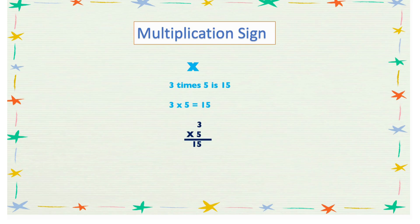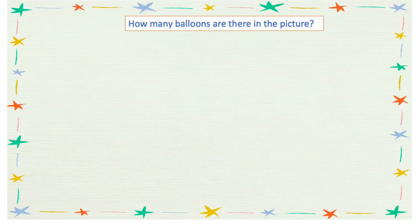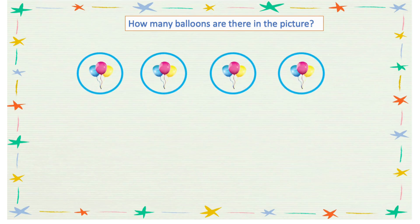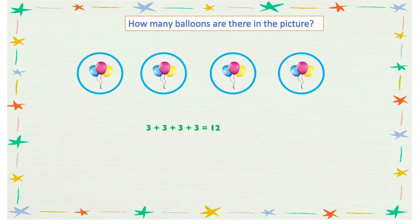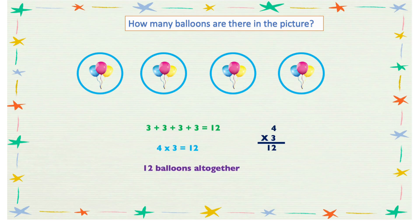Let's look at another example — how many balloons do we have in this picture? Here we have 4 groups and each group has 3 balloons. So we can do 3 plus 3 plus 3 plus 3 equals 12, or in multiplication form: 4 times 3 equals 12. You can also write it vertically: 4 times 3 equals 12. So we have 12 balloons all together.